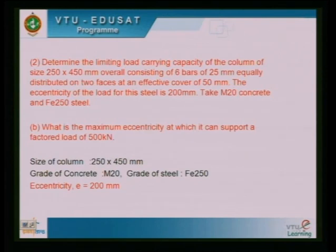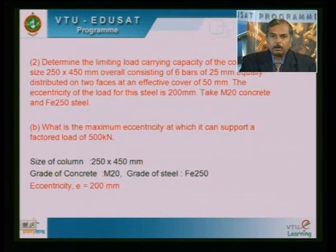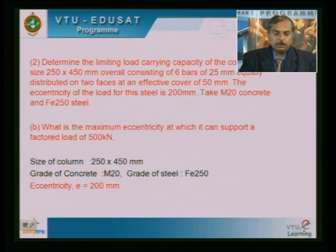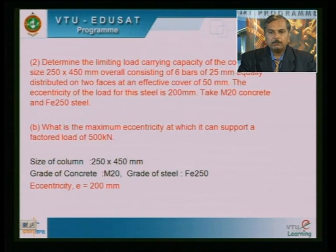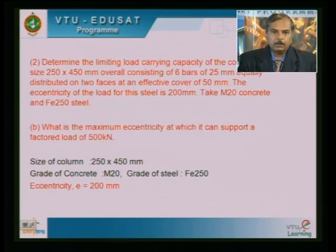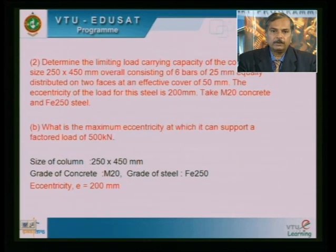This problem is slightly different compared to the previous one. In the previous problem, load, moment, and steel were all given and we needed to check whether the column is okay. Here, the eccentricity of 200 mm is given along with the column type and reinforcement, and we need to identify the maximum load that can be applied at this eccentricity.